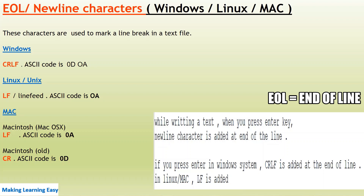These characters are used to mark a line break in a text file. In Windows, CRLF is used as a new line character with ASCII code 0D 0A. In Linux or Unix, the line feed (LF) is used as a new line character. In Mac OS X, LF is also used, while in older Mac operating systems, CR was used as the new line character.